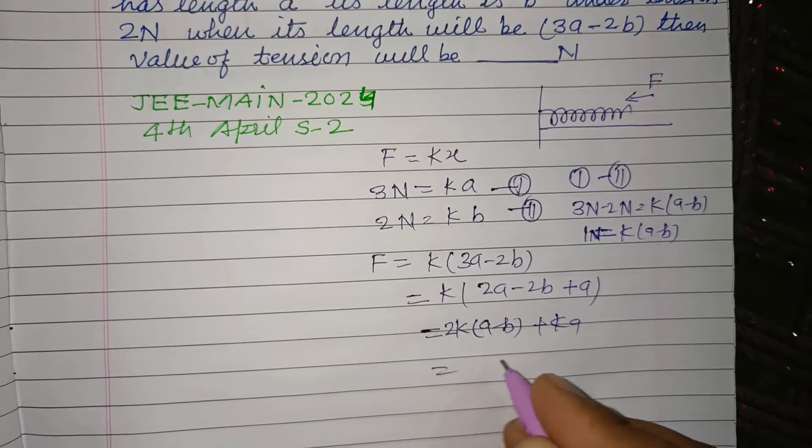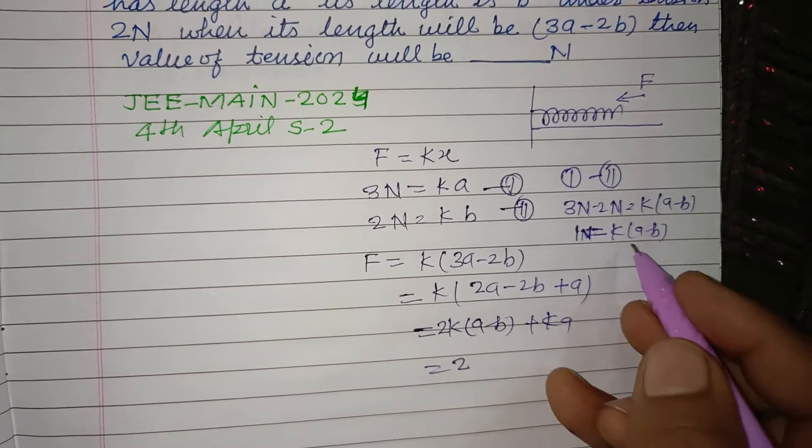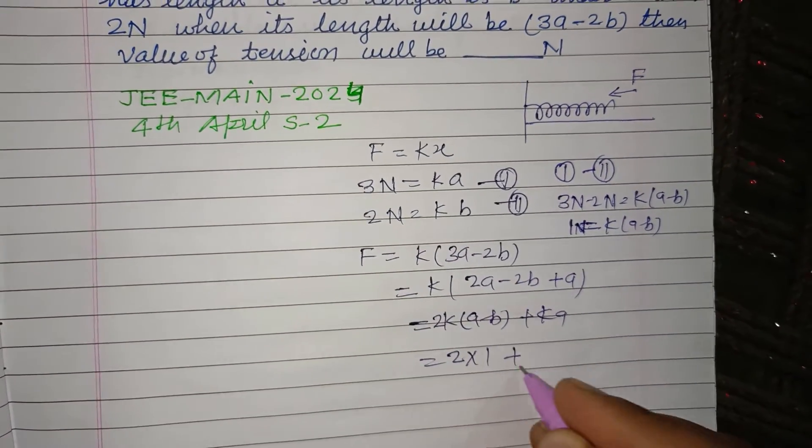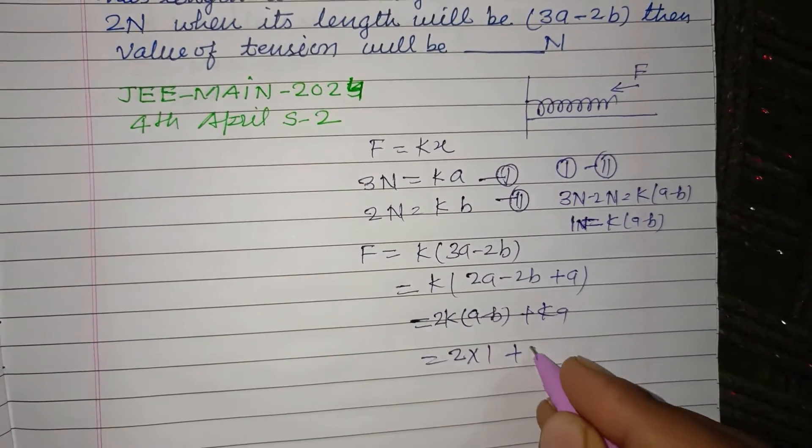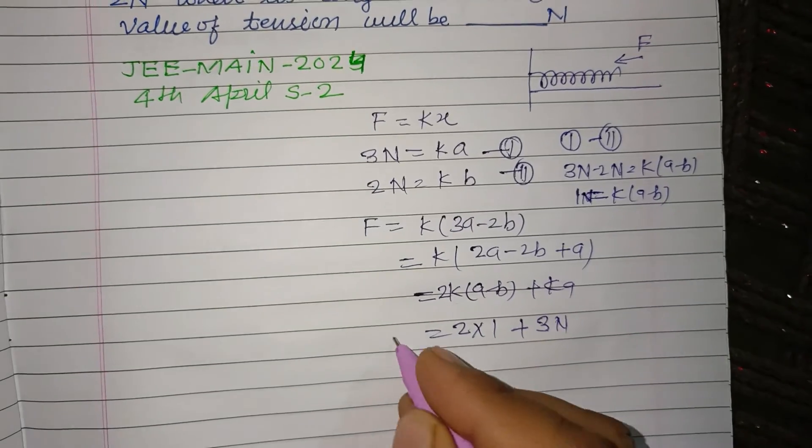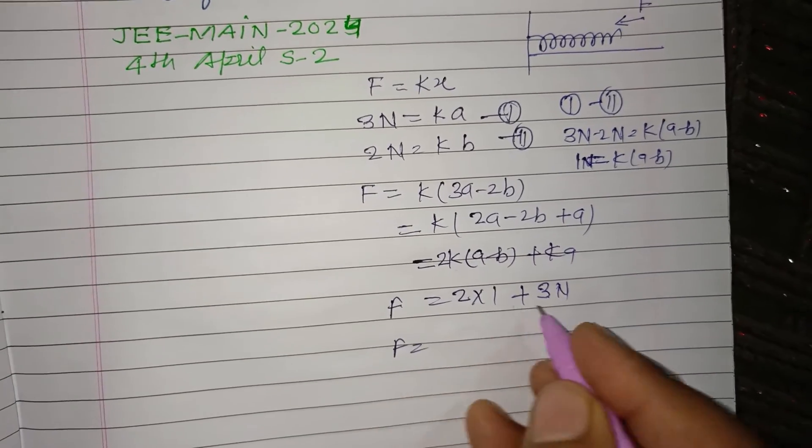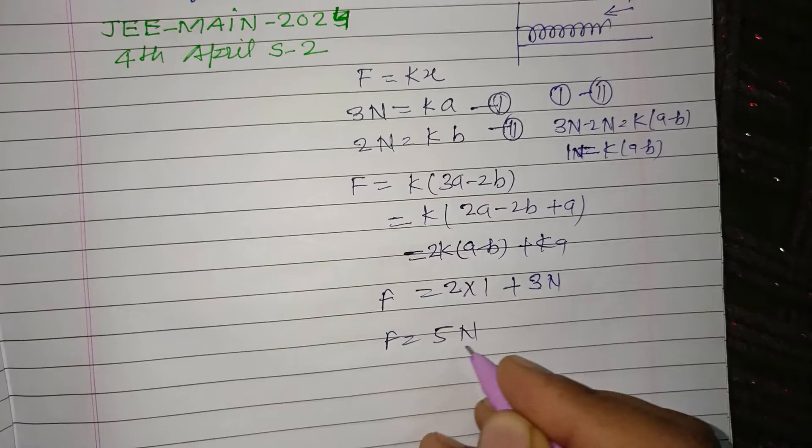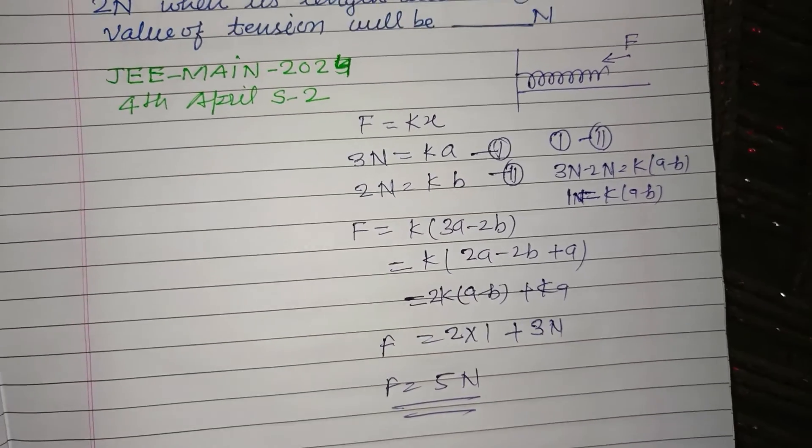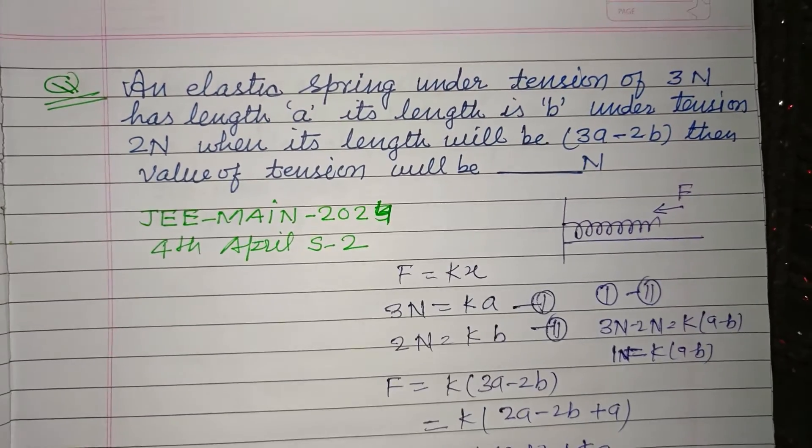Here 2 times k(a - b) is given to us as 1 Newton, and ka equals 3 Newtons. Therefore force is 2 plus 3 equals 5 Newtons. 5 Newtons force is required to make the length (3a - 2b).